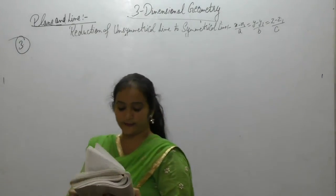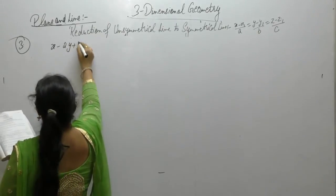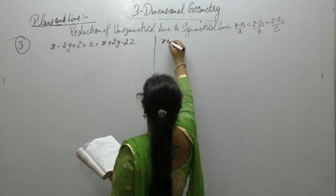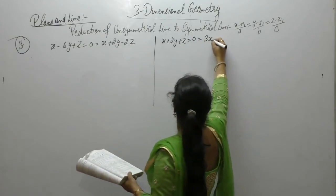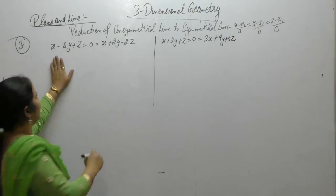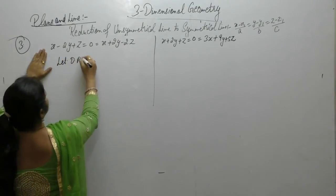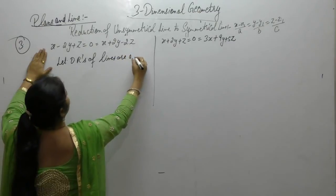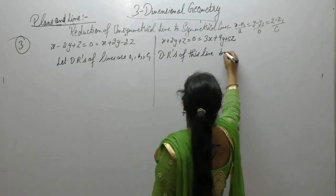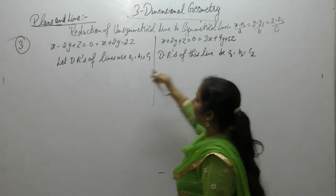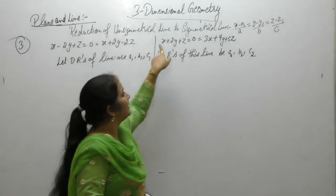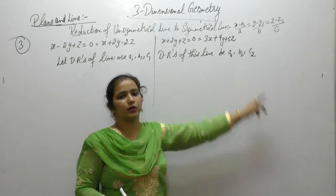Find our angle between the lines x minus 2y plus z is equals to 0 x plus 2y minus 2z and x plus 2y plus z is equals to 0 is equals to 3x plus 9y plus 5z. Now, we want to find the angle between the this. Let the direction ratio of these lines are A1, B1 and C1 and the direction ratios of these lines be A2, B2 and C2. Direction ratio of the line this and this be proportional to A1, B1, C1 and direction line of this line and this line be proportional to this.